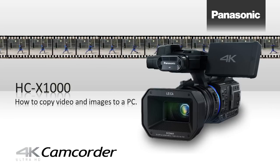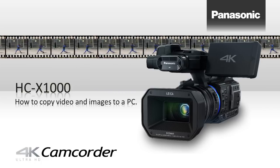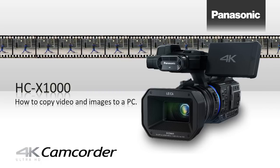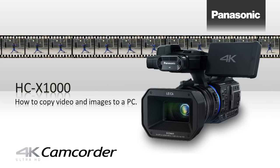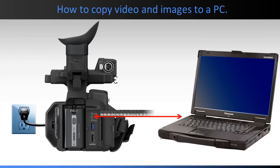In this video, we will show you how to copy video and images to a PC from the HCX1000 camcorder. When you connect this unit to a PC, it recognizes this unit as a card reader. The connection enables you to access the SD card in this unit from the PC. Use the AC adapter so that the battery does not run down during the copy process.